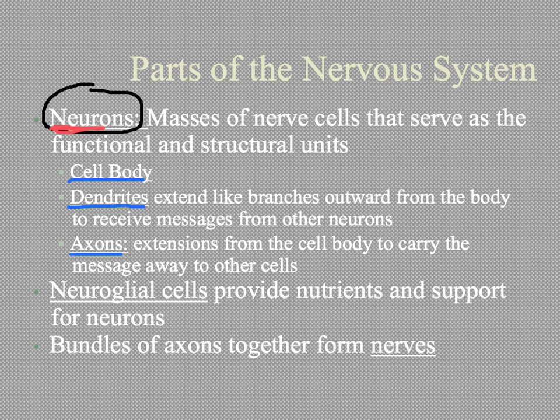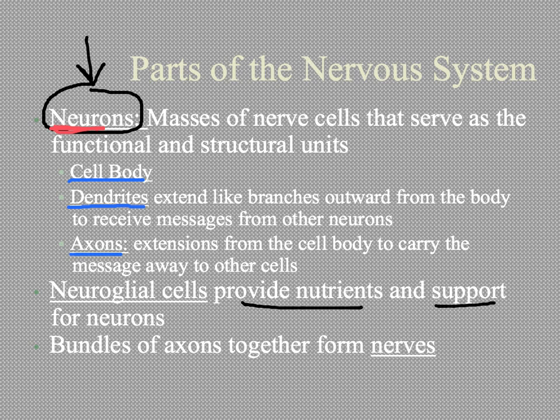There are other cells within the nervous system as well. They're called neuroglial cells. These cells are basically there to provide necessary things for the neurons. The neurons do the work of the nervous system — they're responsible for receiving and sending information. The neuroglial cells give food and structural support for the neurons, surrounding them and helping to hold them in place.